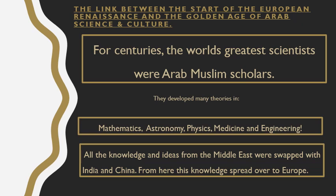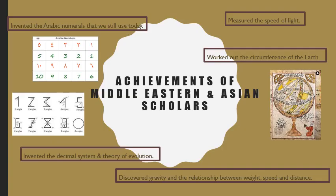Coming back to it, some of the first mathematicians were Muslim Arab. The astronomers were Muslim Arab. Physics, medicine, science, and engineering had all started in these Middle Eastern countries by Arab scholars. It then developed when they started sharing ideas and knowledge with the Indians and the Chinese — remember, we learned about Chinese medicine. All of this is linked together, which later got passed over and spread into Europe.